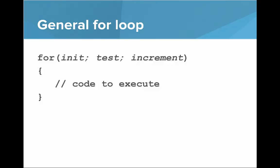So the format of a general for loop is like this: we say for some initialization, semicolon some test, semicolon, and then some increment, and then whatever code we want to execute.